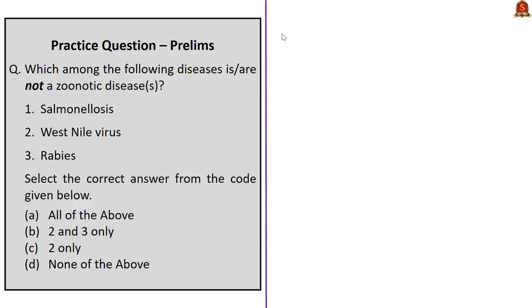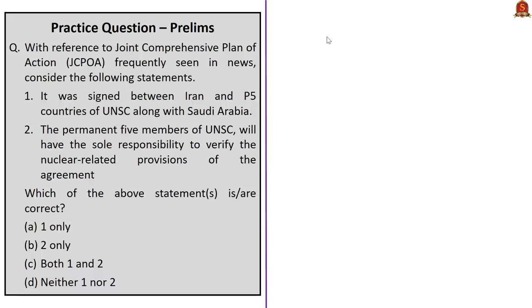In summary, what is a zoonotic disease, can we prevent them, and how to predict them even before they occur — have a basic idea on all these aspects. Let us move on to the next news article.